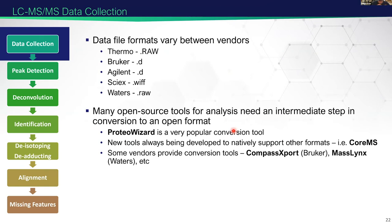The general workflow for LC-MS data processing goes like this: we start off by getting our data out of proprietary vendor format into an open structure we can process ourselves. ProteoWizard is a very popular tool. We're developing CoreMS, which can handle these file formats natively. There are also vendor-provided tools like Compass Export or MassLynx which can do these conversions.